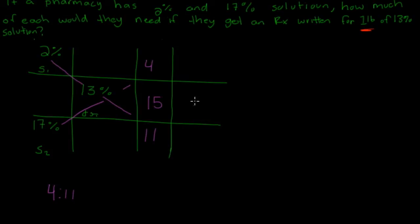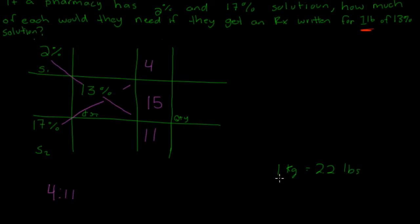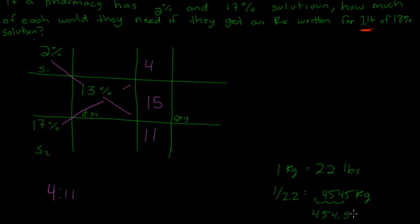The number that goes here is going to be the quantity — the amount that the doctor writes for. He writes for one pound, but we need to convert it to grams. We'll use one kilogram equals 2.2 pounds. To find how many grams are in a pound, we do 1 divided by 2.2, which gives us 0.4545 kilograms. Converting kilograms to grams, we move the decimal three spots, giving us 454.5 grams. We put that number in that spot.